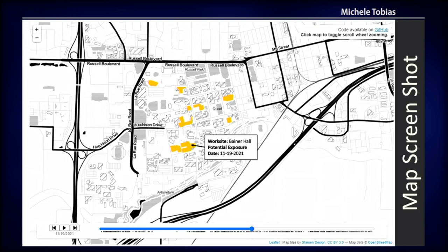This is what it looks like in static form. The time slider has a play button at the bottom where you can hit play and it will run through all of the data we've assembled. It's really cool, but also kind of frightening because you see the spikes on campus and when people are off campus. Because it's Leaflet, we can configure pop-ups — if you click on a highlighted building, it will tell you the workplace name and the exposure date, so you can dig into the data a bit more.